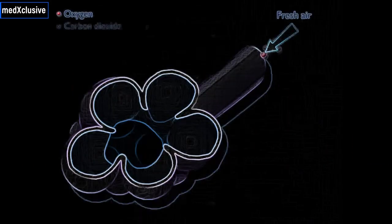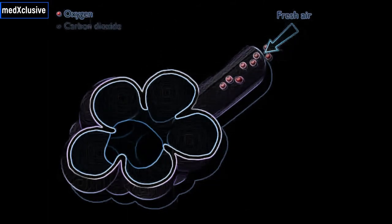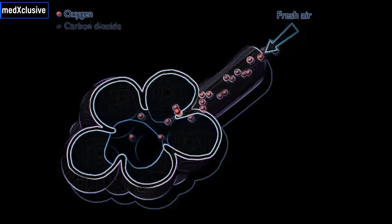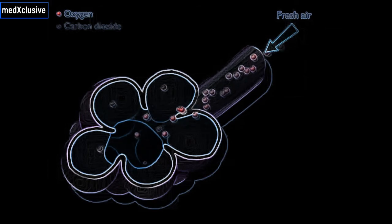Fresh air entering the lungs carries oxygen to the alveoli. The amount of gas in air or of gas dissolved in a fluid can be expressed as partial pressure, which is measured in millimeters of mercury.